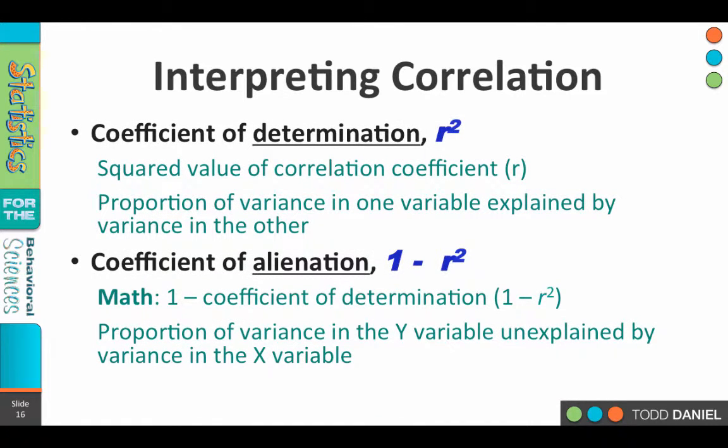If you square a correlational coefficient, make it an r squared, then you have a measure of effect size, and it's talking about the amount of variability that is explained in one variable by changes in the other variable. So remember relationship means that as one variable changes, something happens to the other variable. How much of the change that we see in the second variable is due to changes in the first variable? The r squared coefficient of determination tells us the proportion of variance in that second variable that's explained by variance in the first variable.